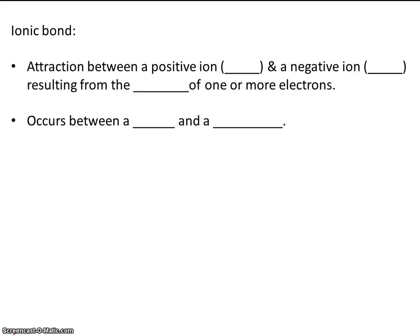So as a review, an ionic bond is an attraction between a positive ion, that's called a cation, and a negative ion, which is called an anion. So it's an attraction between a cation and an anion that results from the transfer of one or more electrons. And you remember that an ionic bond occurs between a metal and a nonmetal.